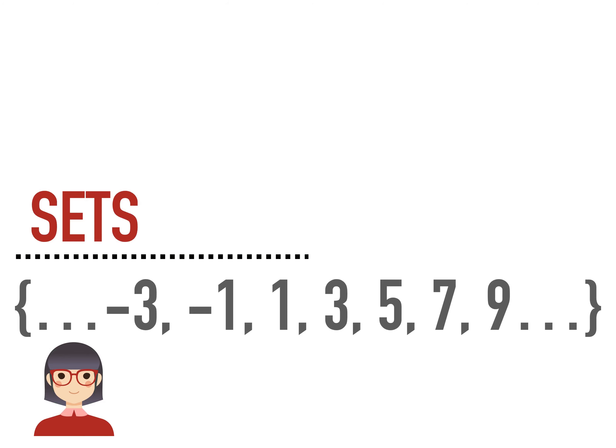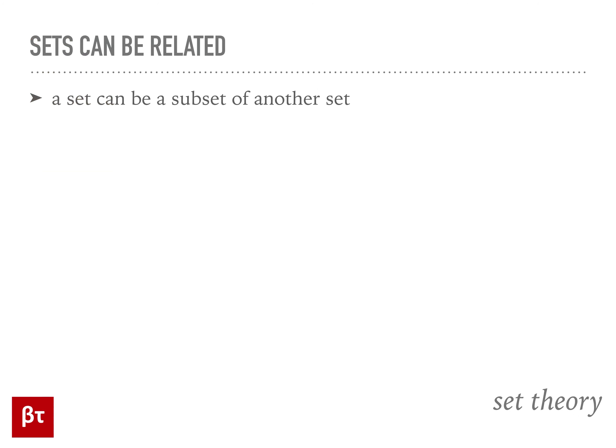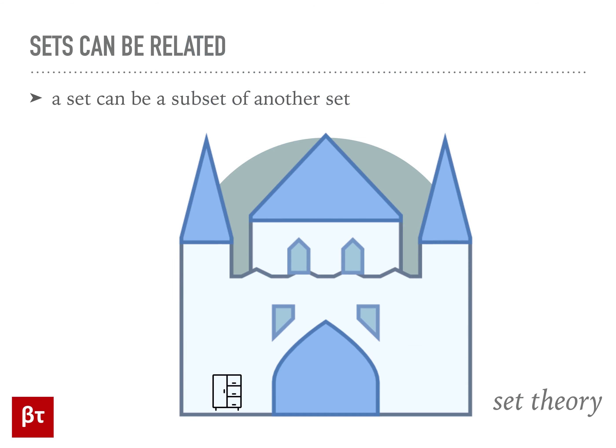Sets can be related to other sets in different ways. One such way is when one set is a subset of another set. This happens when all of the elements in the first set are also in the second set. For example, the set clothes in my closet is a subset of clothes in my house, because presumably my closet is inside of my house.